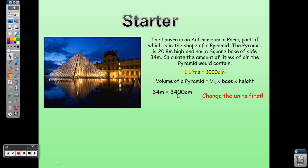34 meters equals 3400 centimeters. Since the base is a square, we multiply the side by itself — 34 times 34 — to get the base area. Since the answer is required in liters, we first convert to centimeters: 3400 cm and 2080 cm. Changing meters to centimeters means our final answer will be in centimeters cubed.